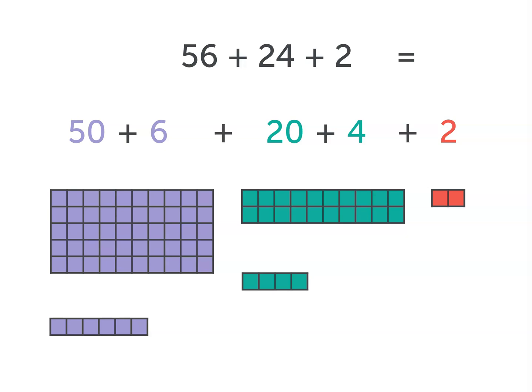So essentially, we're adding 50 plus 6 plus 20 plus 4 plus 2. Nothing has changed because we still have the same number of tiles.